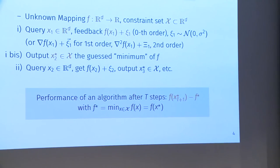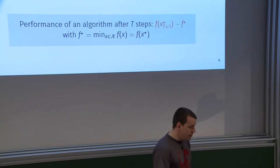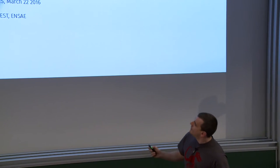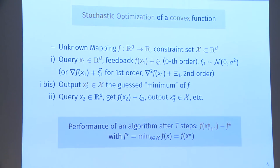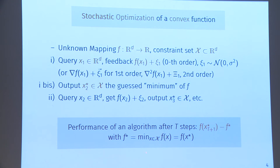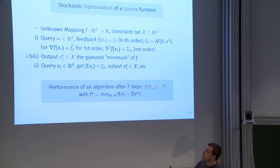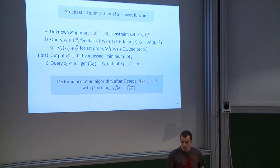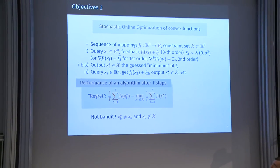Why mention this common knowledge? Because the title contains the word 'online.' Online optimization is exactly the same as classical stochastic convex optimization, except that the mapping f can change over time. When you make the first query, it's f1; then f2, f3, and so on. We have a sequence of mappings f1, f2, f3, rather than just one fixed mapping f.